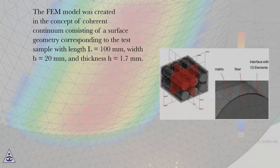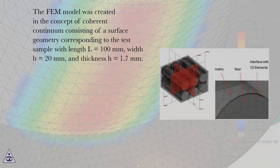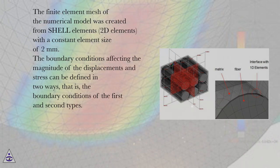The FIM model was created in the concept of coherent continuum, consisting of a surface geometry corresponding to the test sample with length L equals 100 millimeters, width B equals 20 millimeters, and thickness H equals 1.7 millimeters. The finite element mesh of the numerical model was created from shell elements (2D elements) with a constant element size of 2 millimeters.